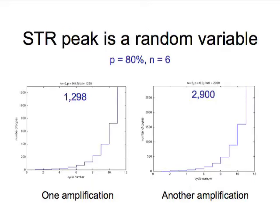An STR peak is a random variable. Here we have two different amplifications done by computer simulation with the same probability of copy success of 80%, starting with six template molecules. After 12 rounds of copying with almost exponential amplification, we see that one amplification produces about 1,300 copies, while another amplification, under the identical reaction conditions, produces more than twice that, 2,900 copies.